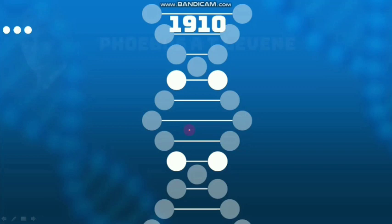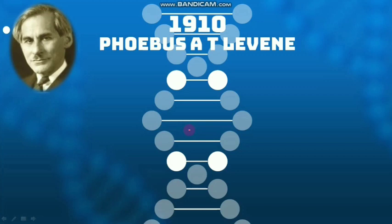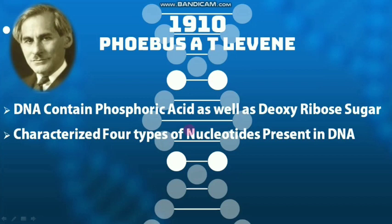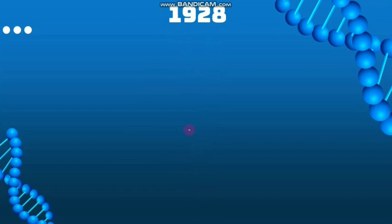In 1910, it was Levine who identified more characteristics of DNA. He said DNA contains phosphoric acid as well as deoxyribose sugar. In addition, he also discovered four different types of nucleotides present in DNA, and he said that DNA is a heteropolymer of these four types of nucleotides.